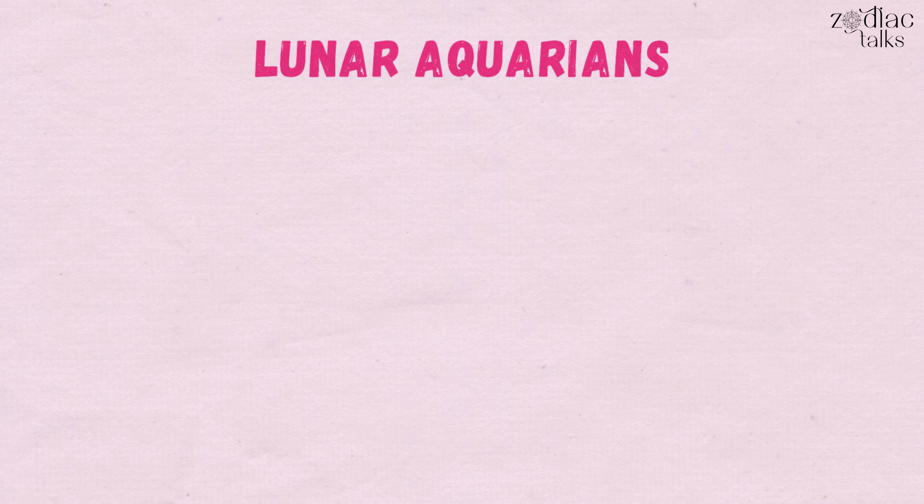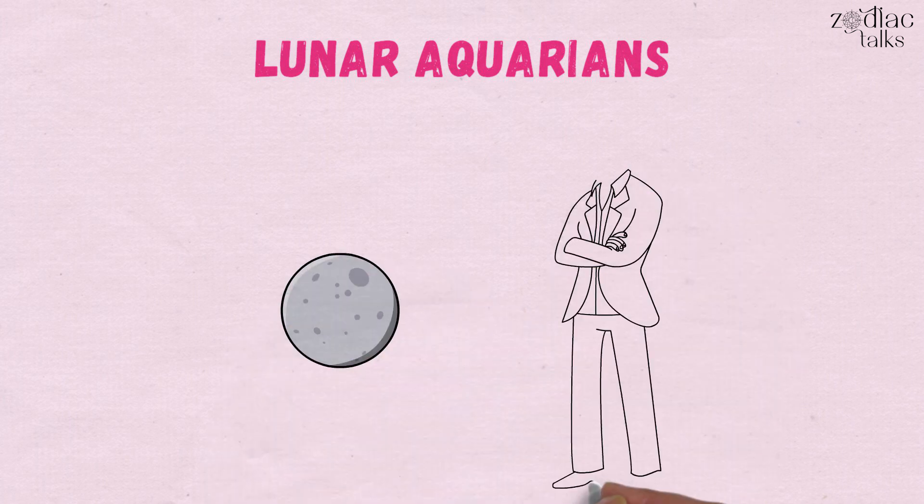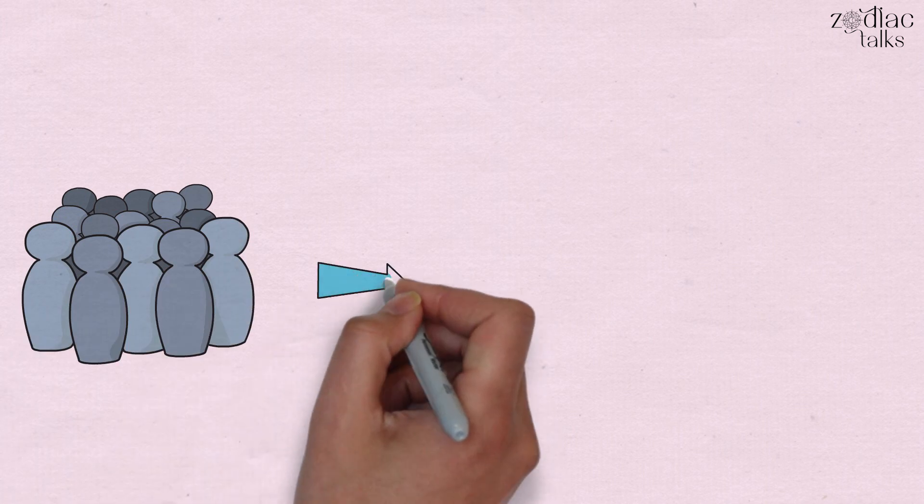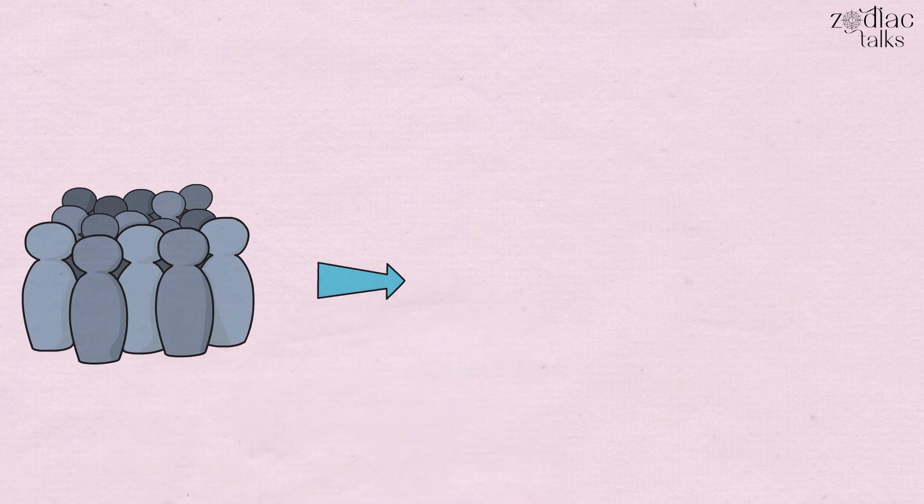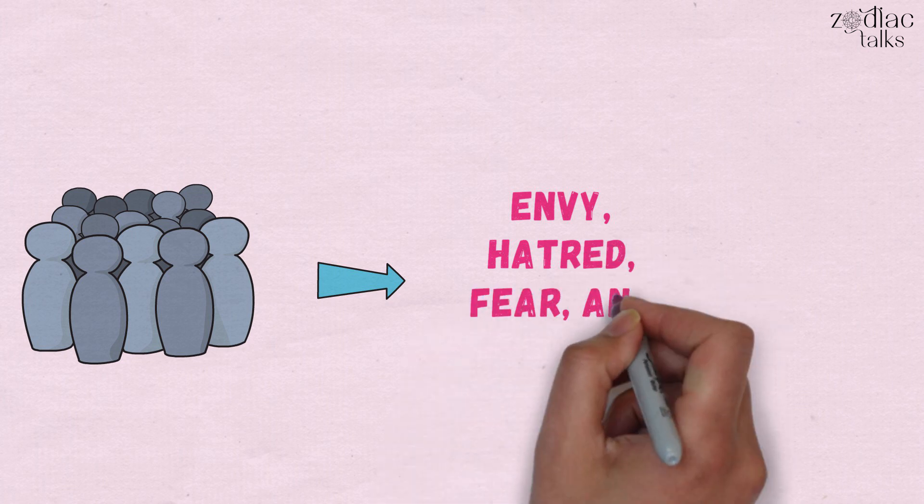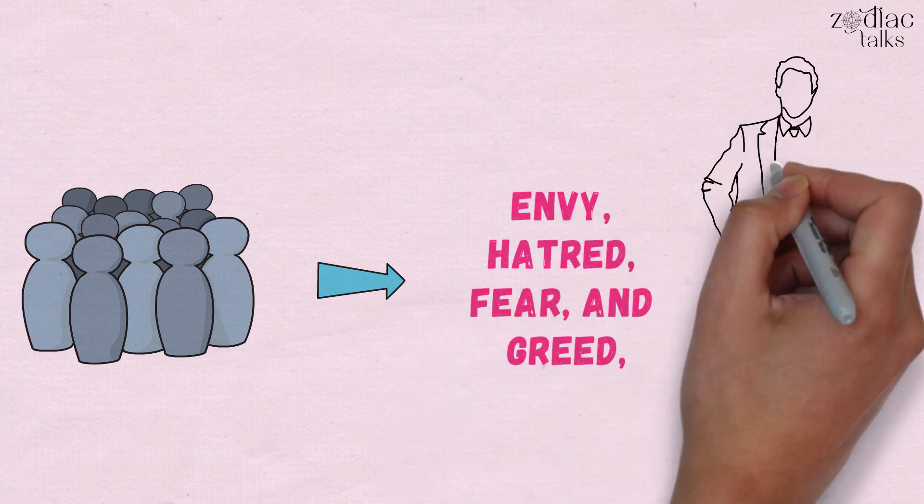Lunar Aquarians, like all air moons, are emotionally disconnected and odd. These people, on the other hand, go a step farther, denying the uglier base impulses of envy, hatred, fear, and greed, wrongly assuming that they're above them.